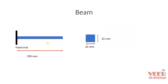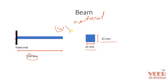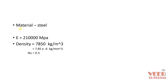We are going to use the Lanczos solver for our problem. The problem involves a beam that is fixed on the left side. We need to find out the natural frequency for this beam, finding the value of omega. The material is steel, and the given material properties are Young's modulus E, density, and Poisson's ratio.